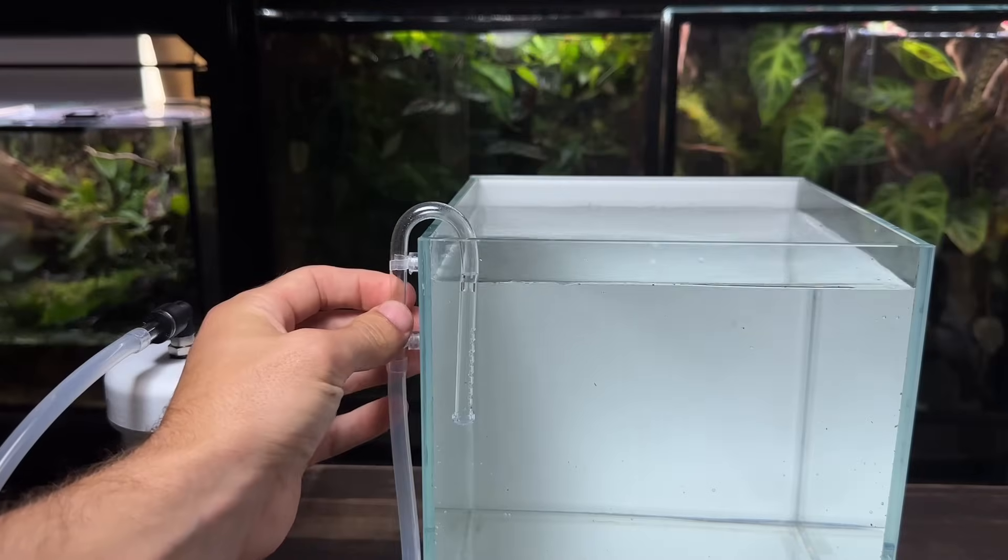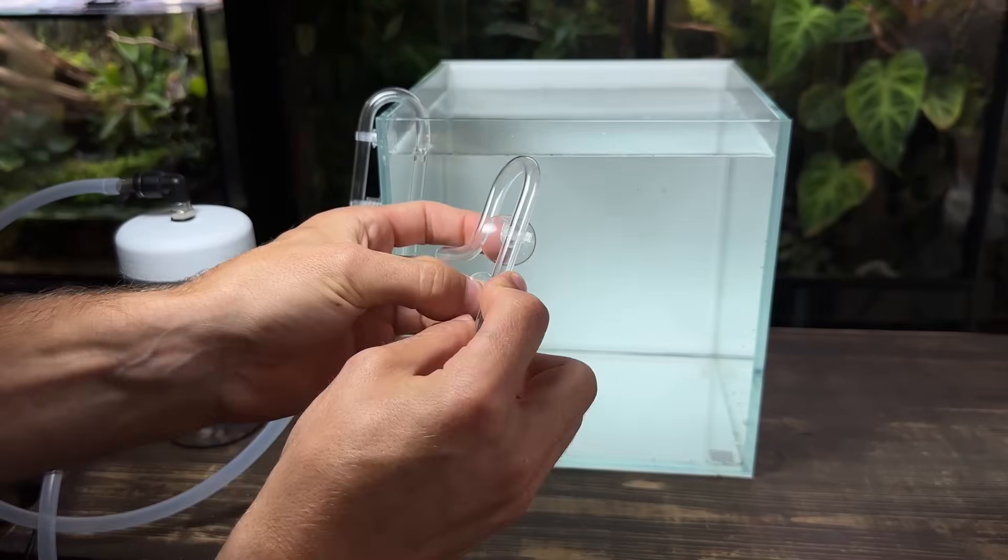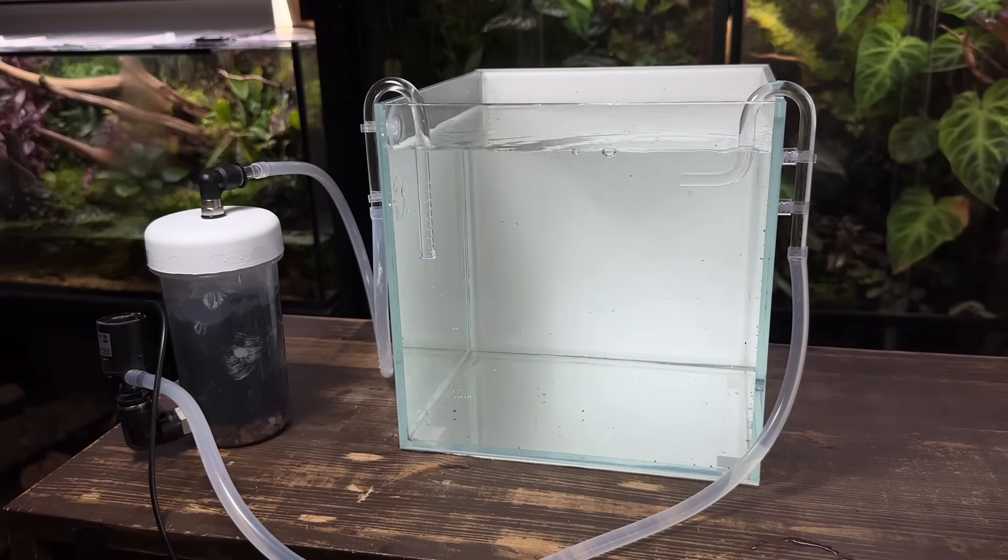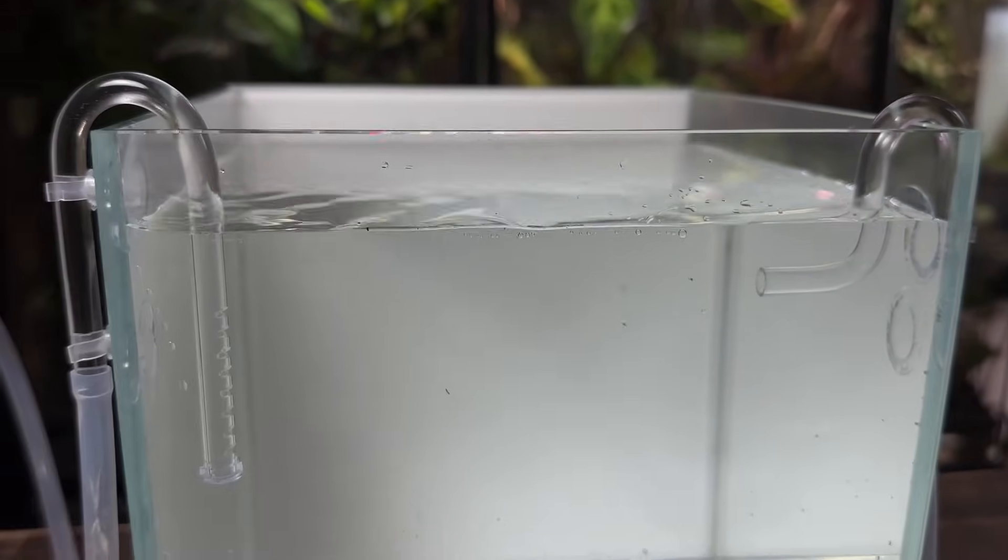The intake and output pipe can now go on the end of the silicone tubing with the suction cups attached. After priming the filter by pouring some water in it I can turn it on and the nano canister filter is up and running.